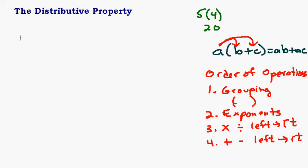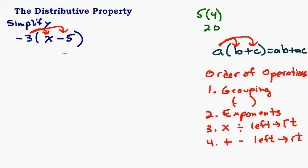Let's do an example with some negatives, because the negatives can be a little tricky. Let's say I've got negative 3 times x minus 5, simplifying using the distributive property. Since the negative 3 is outside the parentheses, I take negative 3 times x and negative 3 times what I think of as negative 5. Negative 3 times x is negative 3x, and negative 3 times negative 5 is positive 15.